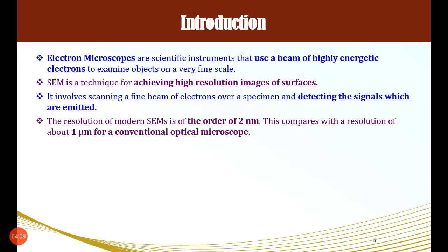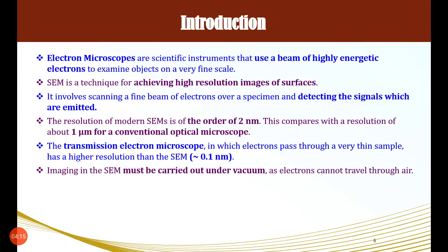By using a conventional optical microscope we can see up to only 1 micrometer, and by using TEM we can see up to 0.1 nanometer. The imaging of SEM must be carried out in vacuum because we use a highly energetic electron beam. Electrons would ionize any air or gas particles present, therefore the whole system is placed in high vacuum. Note: 1 nanometer means 10 raise to minus 9 meters, and 1 micrometer means 10 raise to minus 6 meters.